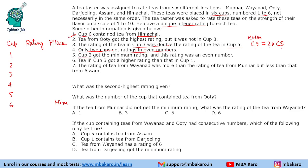Cup 2 got the minimum rating and this rating was an even number. So cup 2 is also even and cup 3 is also even, and the rest will be odd numbers. So it is sorted out that cup 2 and cup 3 are even and the others are odd. Cup 2 has got the minimum rating and it is an even number.